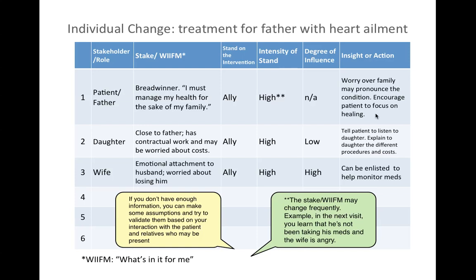His daughter is close to the father, has contractual work, and might be worried about the cost of treatment. So she's an ally; her intensity is high, but she doesn't exert a lot of influence with the father. Our action here is to tell the patient to listen to his daughter, and explain to the daughter the different procedures and costs to allay her worries. The patient's wife has an emotional attachment to her husband and is worried about losing him — so of course she's an ally, with high intensity and high degree of influence. The father listens to the wife, so we could enlist the wife to help monitor the medicines administered to the patient.